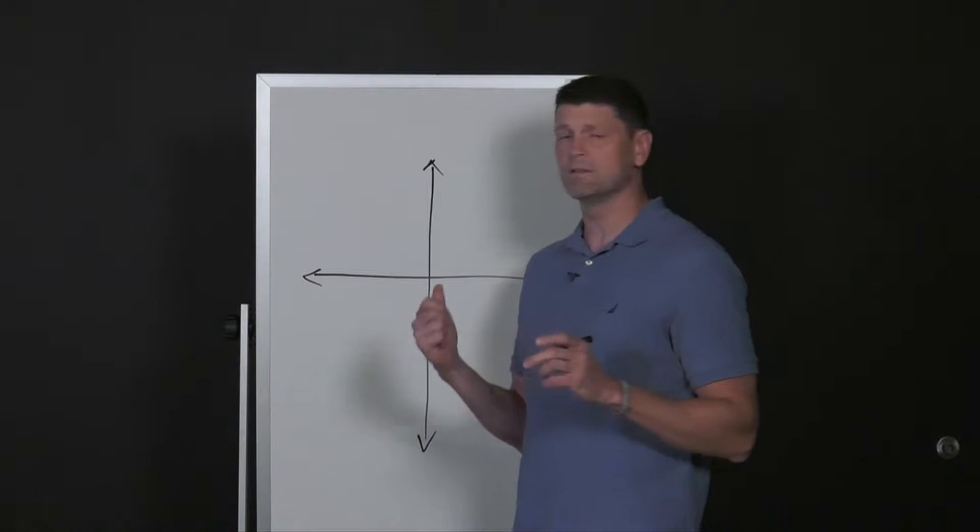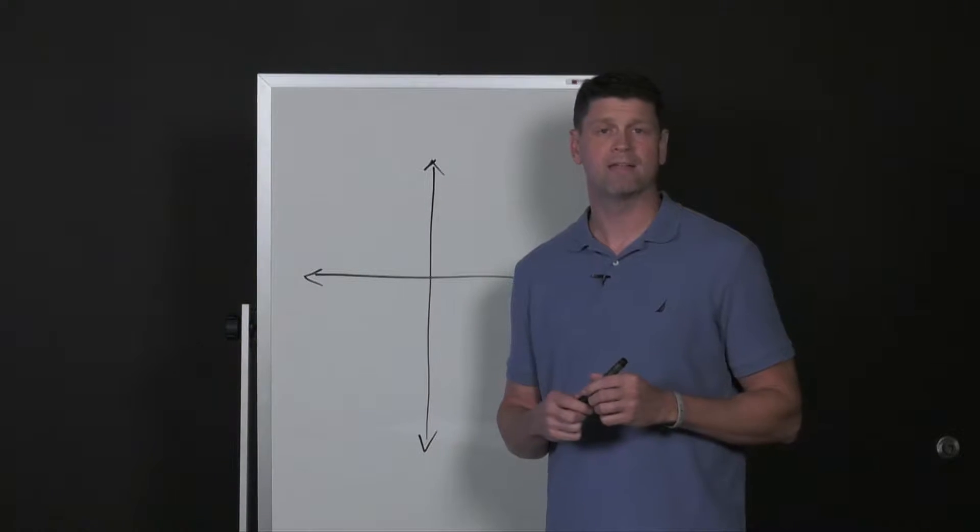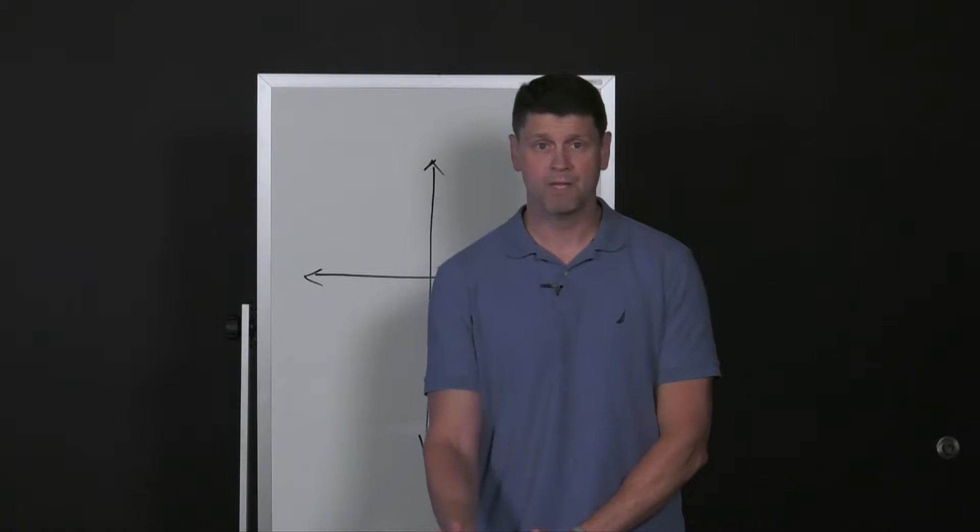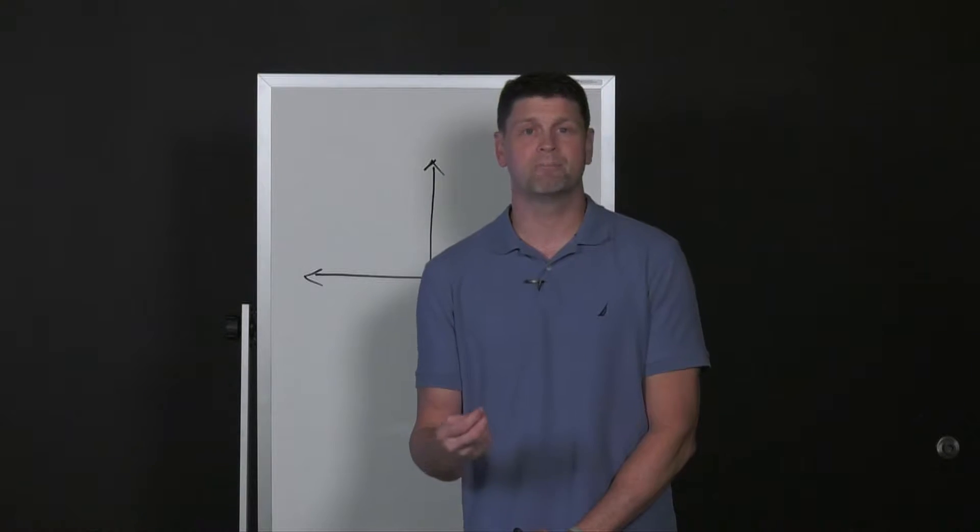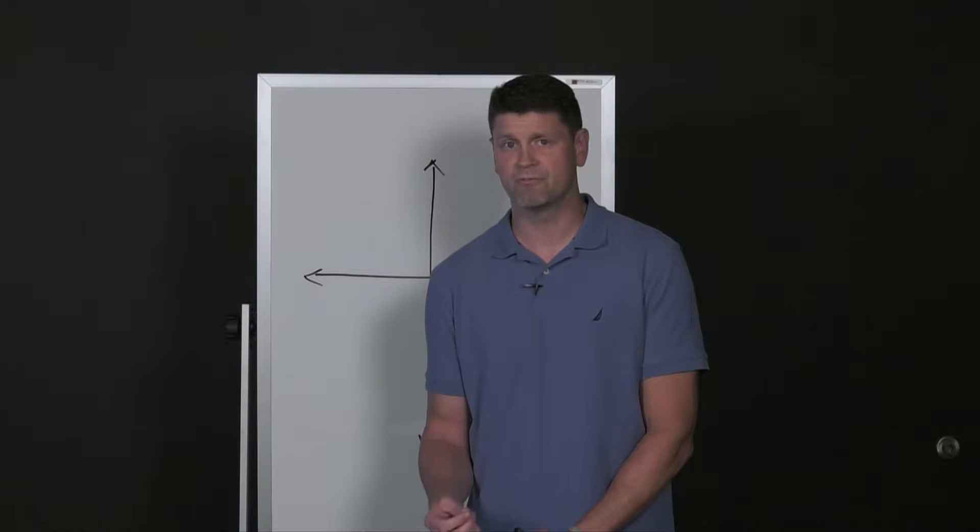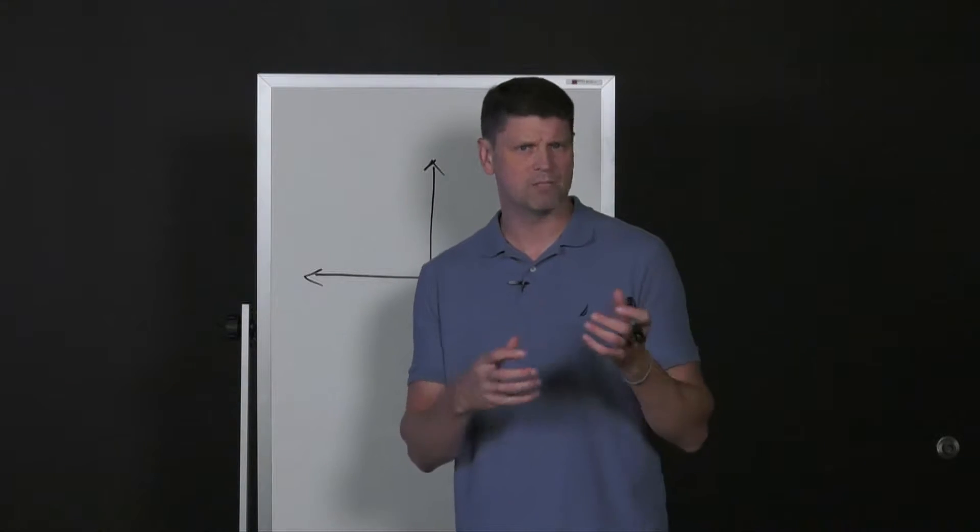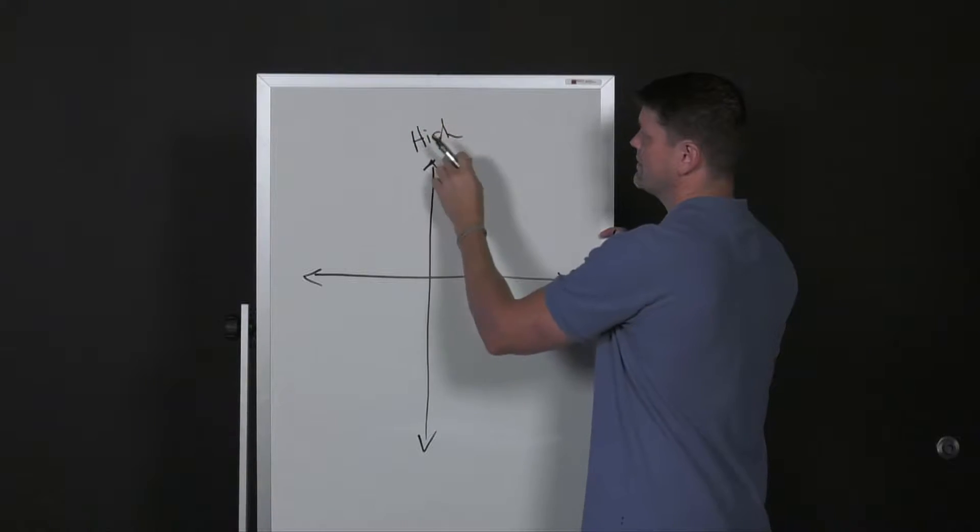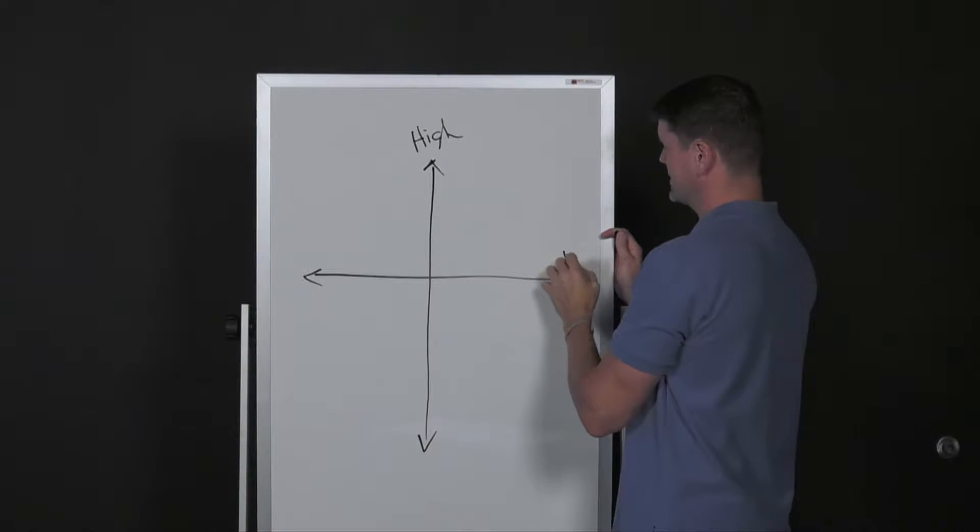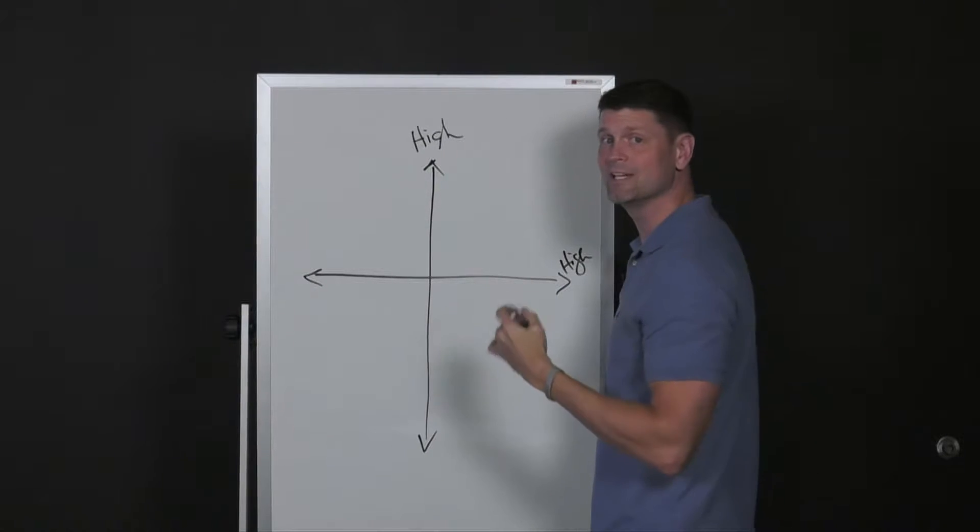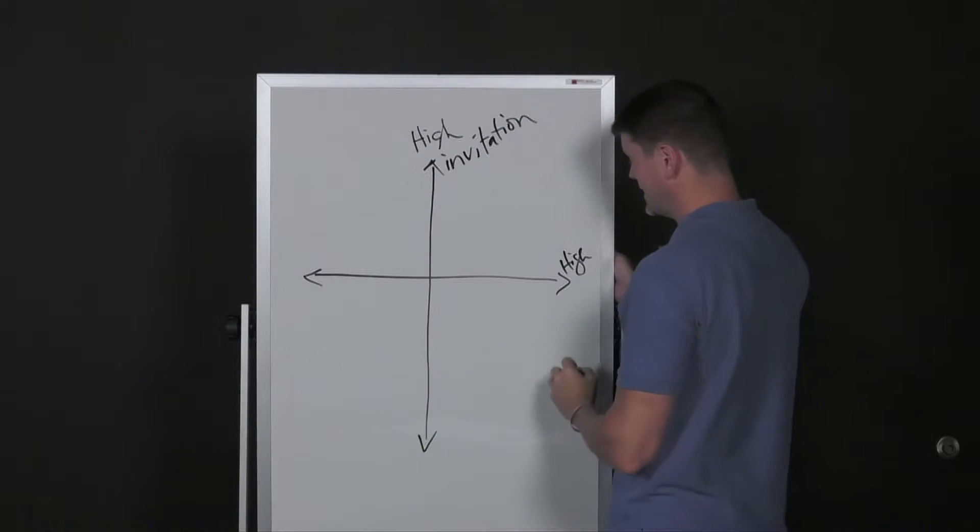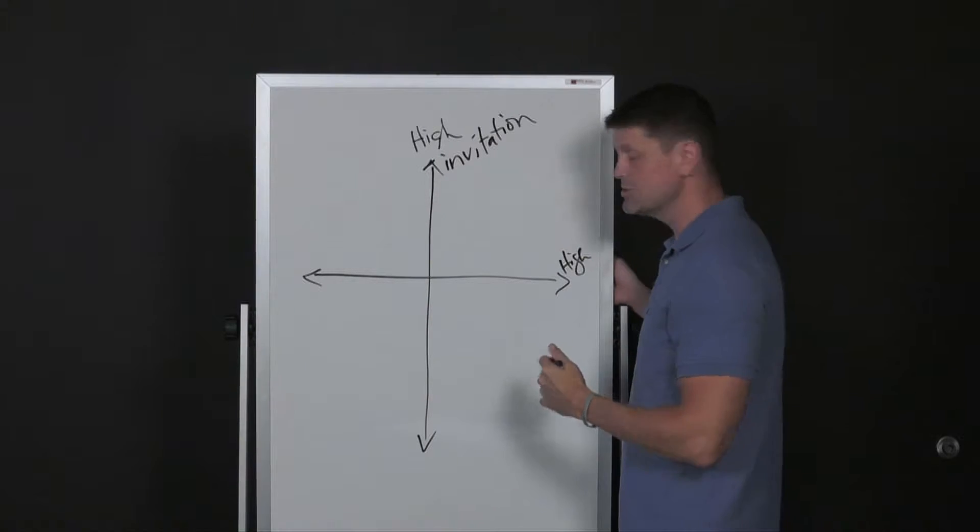We're going to look at another tool from Mike Breen that is called the Invitation Challenge Matrix to make sure that what we are presenting in our ministries is one that is conducive for making disciples. We want to make sure that we stay away from being too heavy on certain aspects. If we have this matrix, and we say that this is high on this side and this side, on the vertical line, we're going to say this is our invitation. The horizontal line will be our challenge.